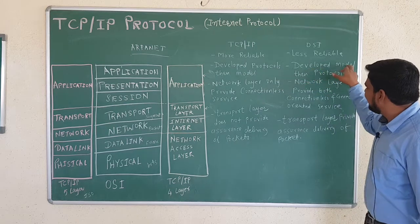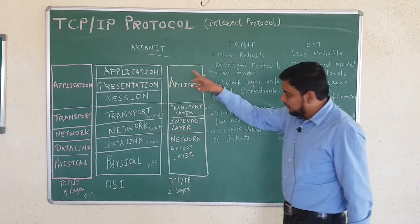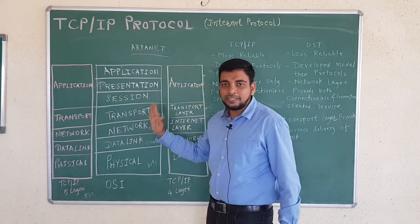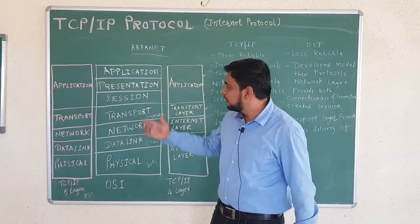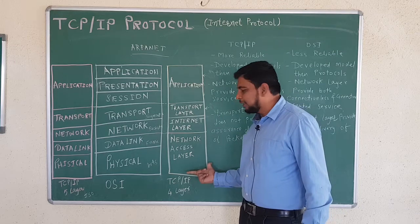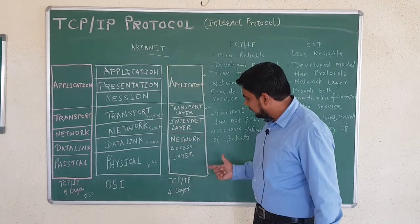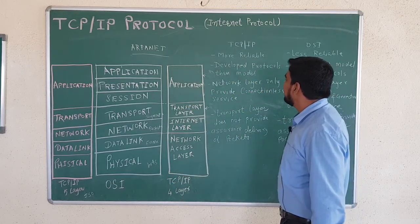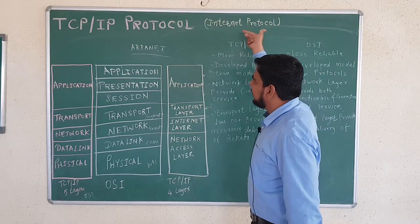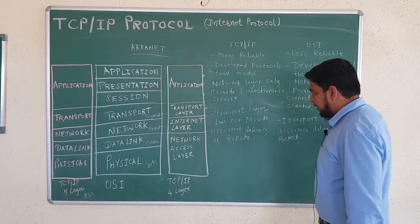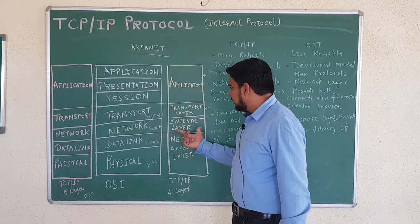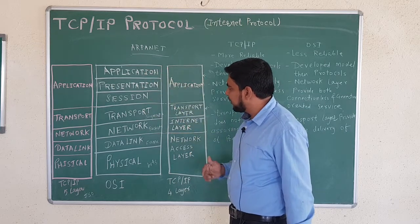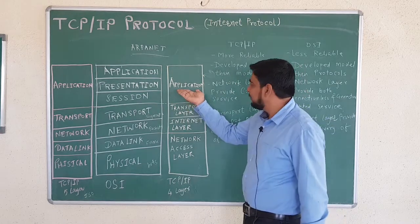In TCP/IP, protocols were developed first and then the model; in OSI, the model was developed first and then the protocols. OSI is a theoretical model used to explain concepts, while TCP/IP is the practical model actually used whenever we communicate on the internet. TCP/IP is also called the internet protocol. In the 4-layer architecture, the network layer is called the internet layer, transport layer remains as transport layer, and session, presentation, and application functions are combined in the application layer.